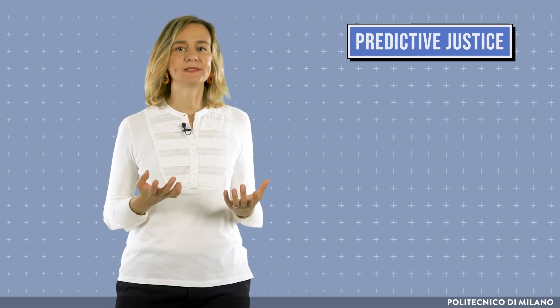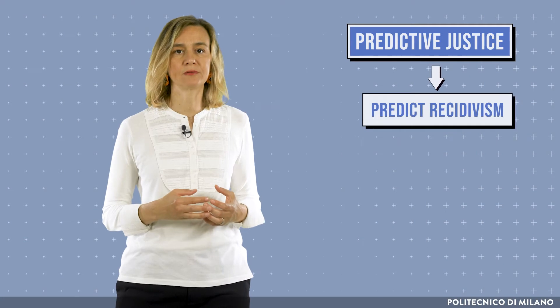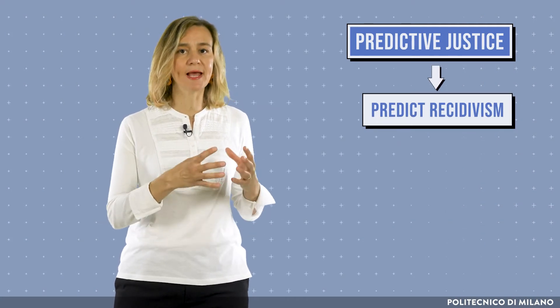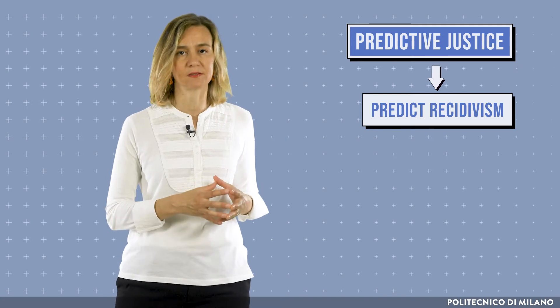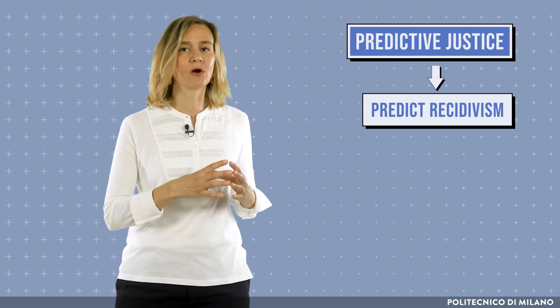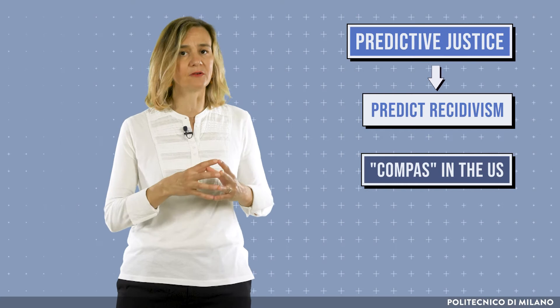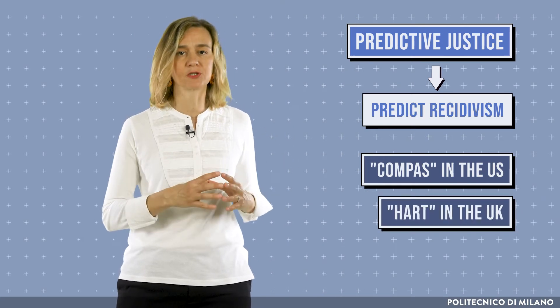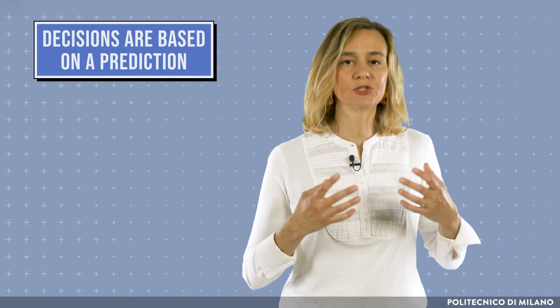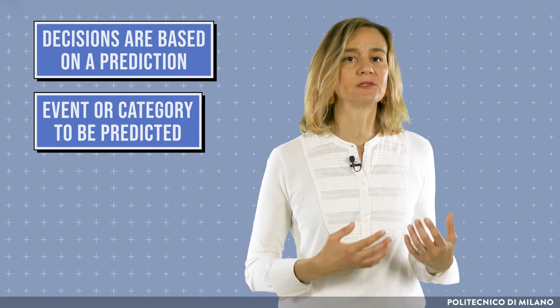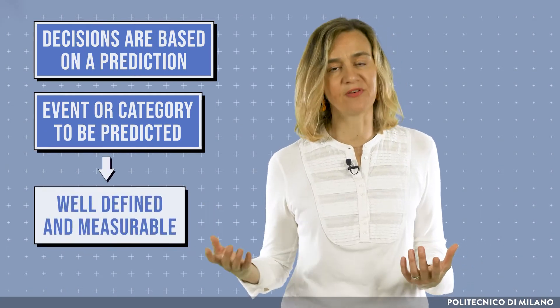More problematic applications are those of the so-called predictive justice. These automated decision systems are used, for example, to predict recidivism, that is the possibility that an arrested person can re-offend. For example, in the US, the software called COMPAS is widely used to automatically evaluate the risk of recidivism. In the UK, a similar software is HART. The use of such systems is simpler in those situations where decisions are based on a prediction and the event or the category to be predicted is well-defined and measurable.